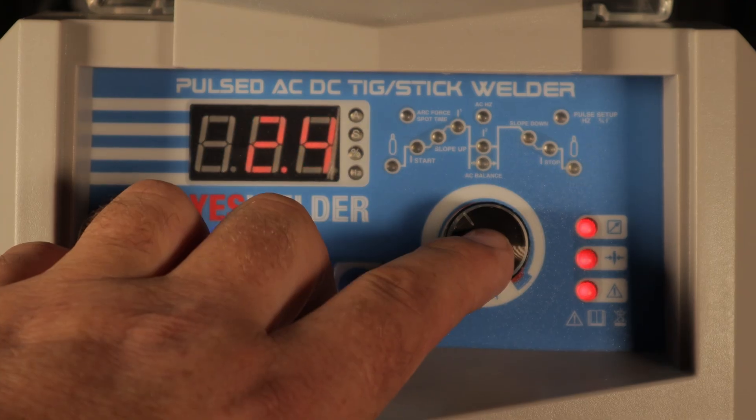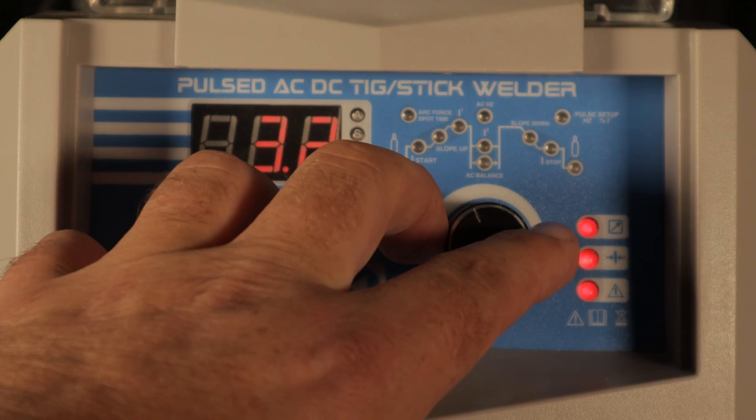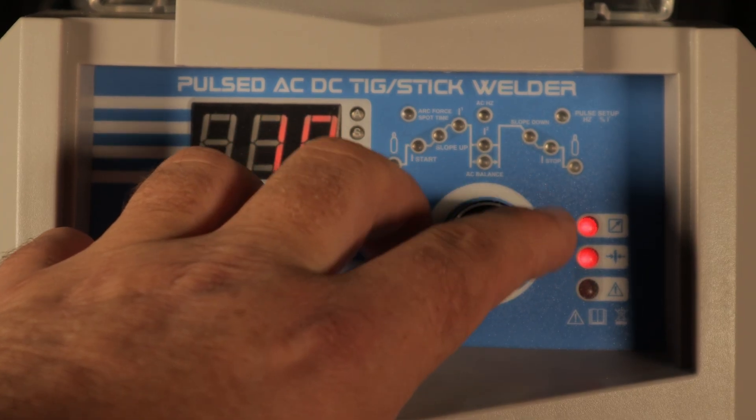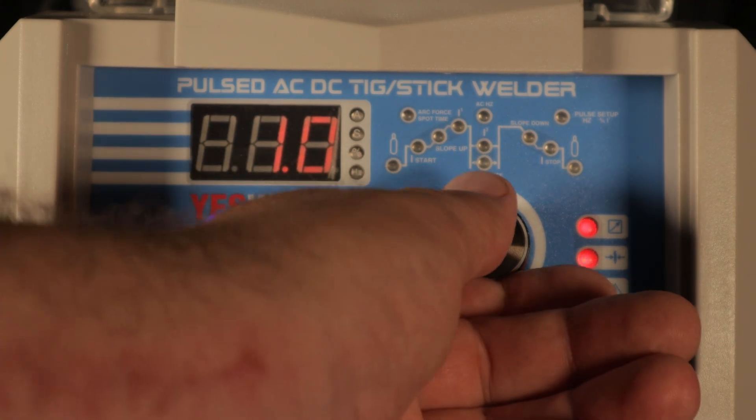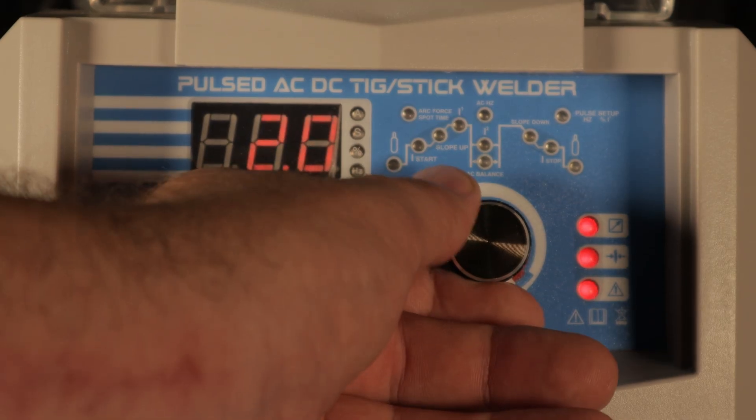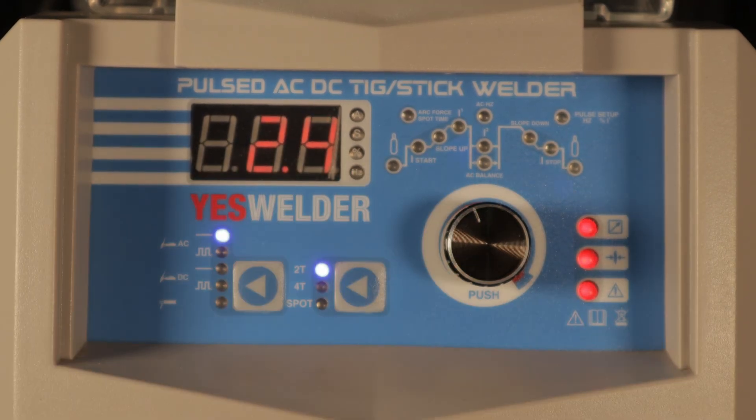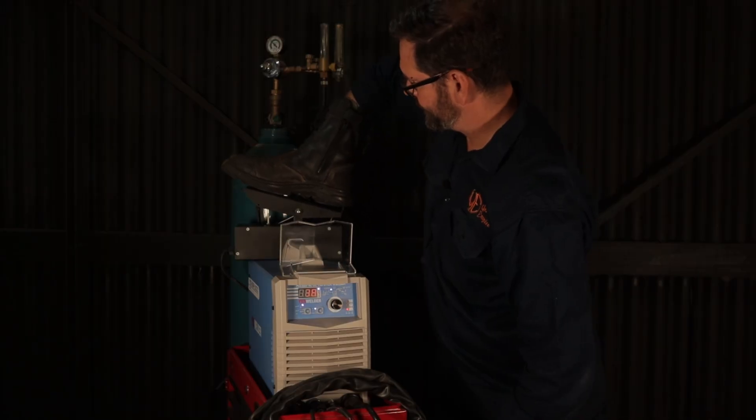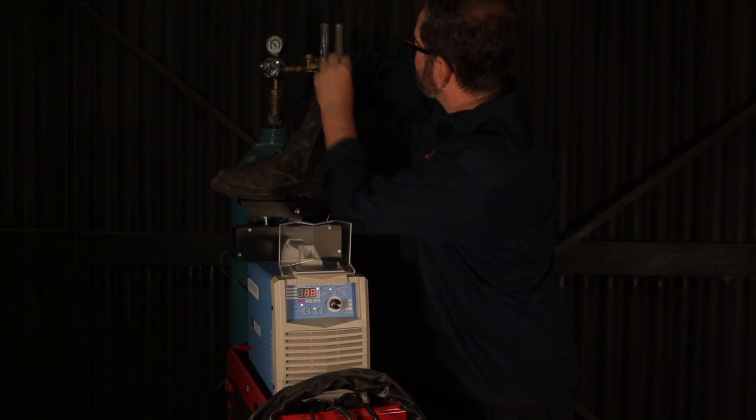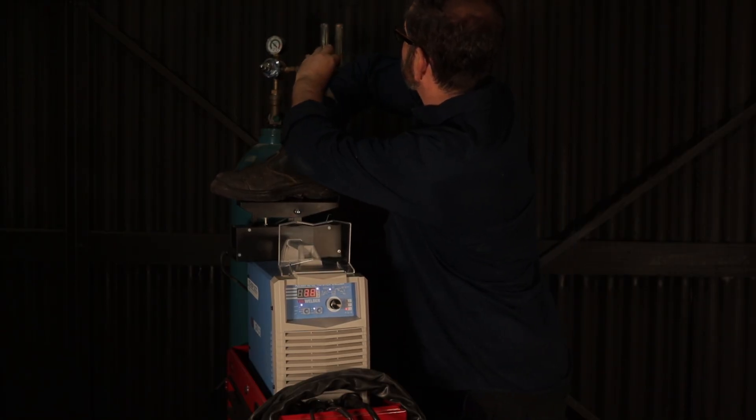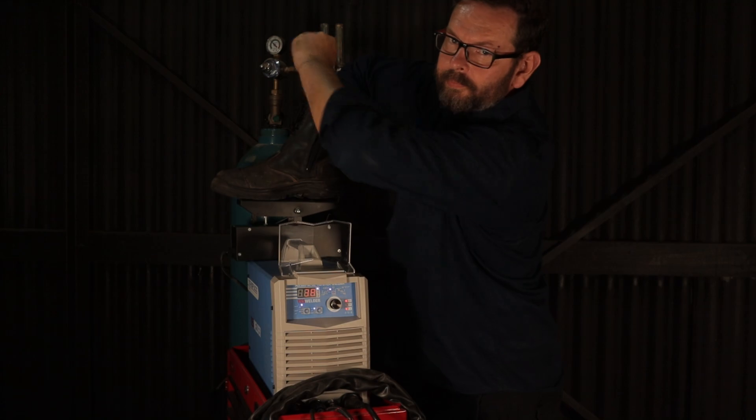For some YesWelder specific settings, the next selection would be tungsten diameter. I've got mine set at 2.4 millimeters. This is why there is a triangle with an exclamation mark in it. It's saying that it's out of its recommended parameters. When it comes to engaging the foot pedal, I set the gas flow at the same time. You need to hold the pedal down for around seven seconds, so this gives you plenty of opportunity to get the correct flow rate. When the machine recognizes the pedal, it lights the remote symbol.